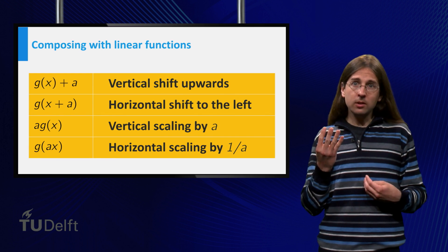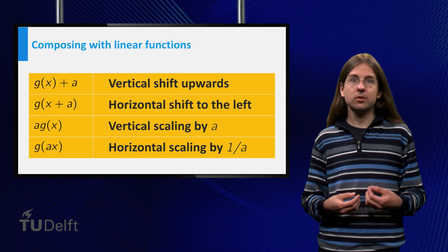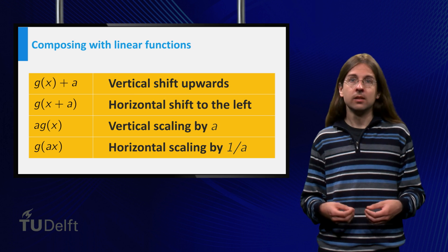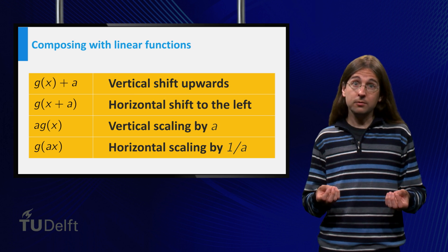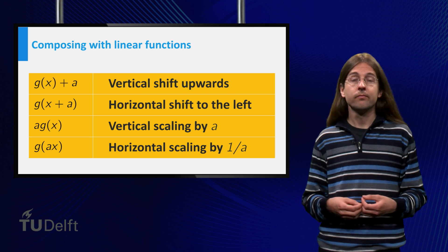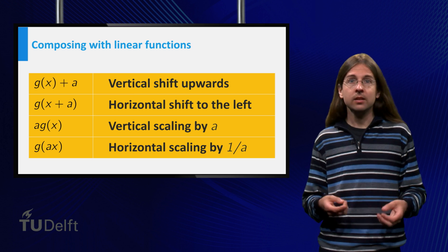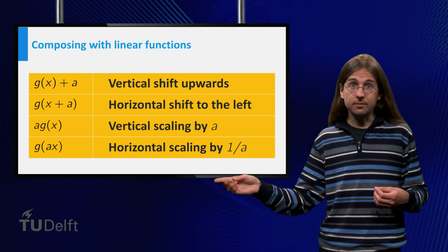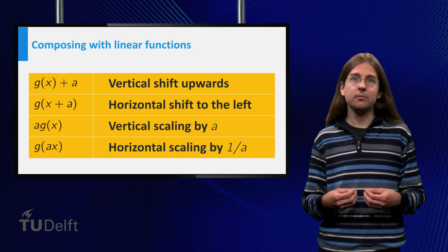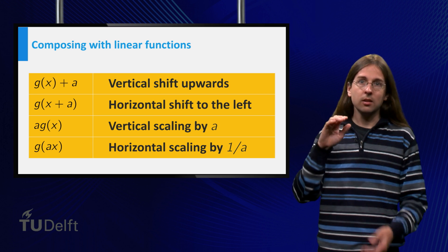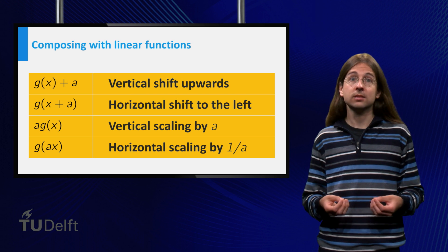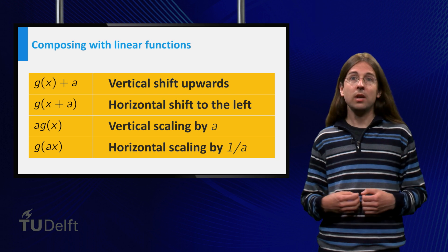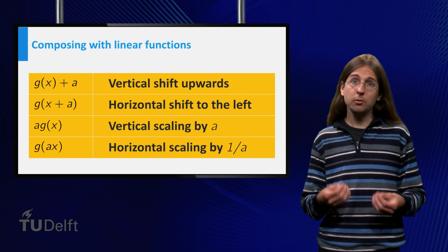We have seen 4 different compositions with separate results for what happens to the graph. g of x plus a gives a vertical shift of the graph a upwards. g of x plus a gives a horizontal shift of the graph a to the left. a times g of x gives a vertical scaling by a factor a from the x-axis. And g of ax gives a horizontal scaling by a factor 1 over a from the y-axis.